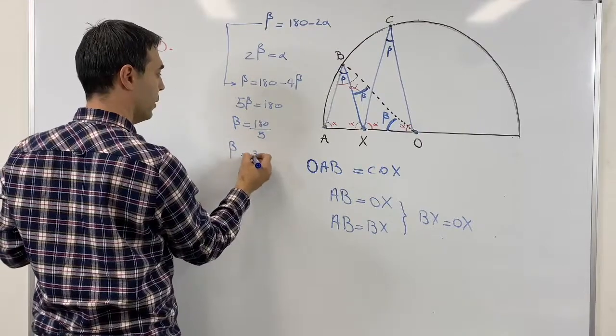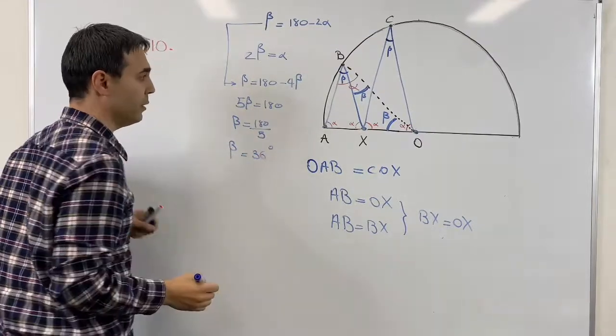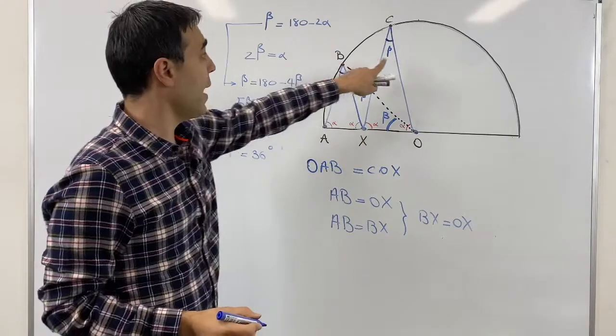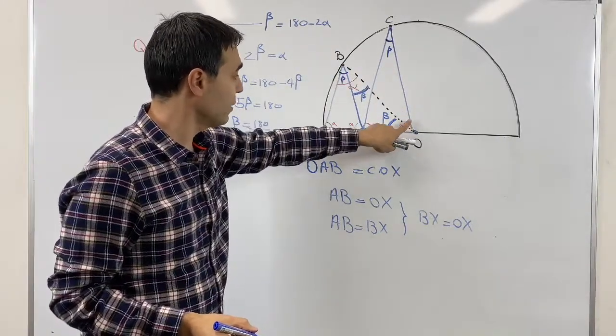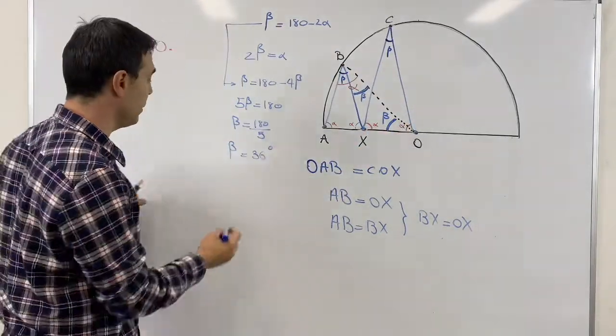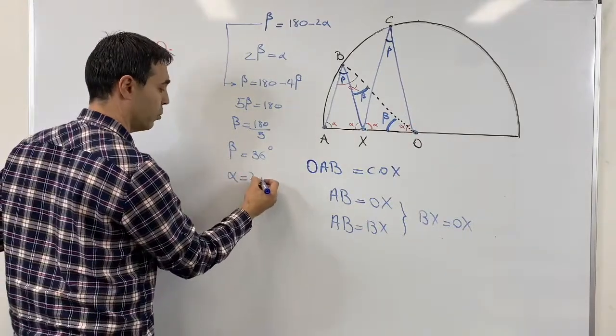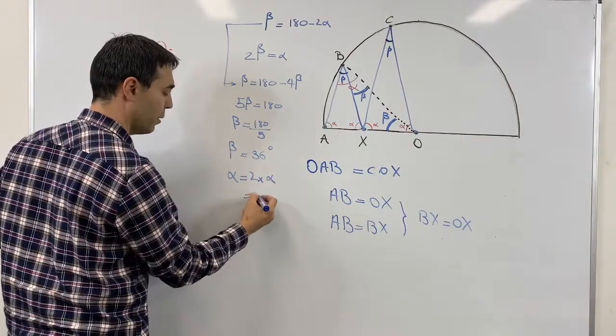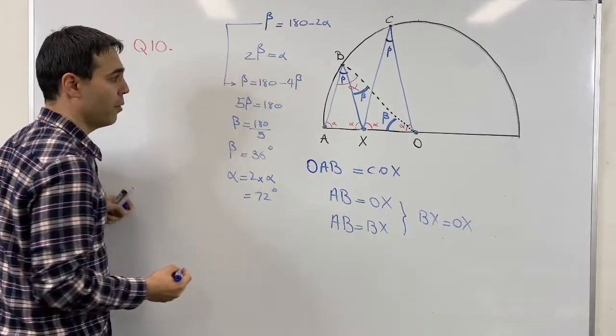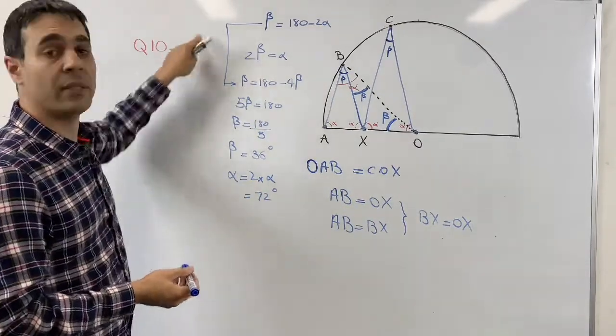And beta is going to be 36 degrees. Now the question does not ask us to find beta. The question asks us to find alpha, which is twice beta, and we know alpha is twice beta, which is 72 degrees. And that completes our proof.